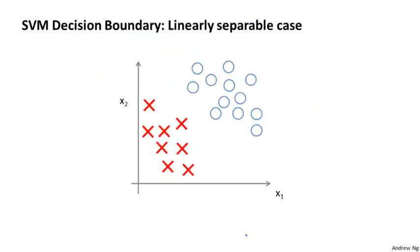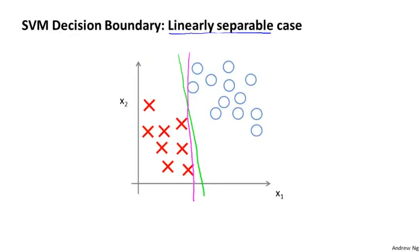When you solve this optimization problem, you get a very interesting decision boundary. If you look at a data set with positive and negative examples, this data is linearly separable — there exist many different straight lines that can separate the positive and negative examples perfectly. For example, here's one decision boundary that separates the positive and negative examples, but that doesn't look like a very natural one. And here's another, but neither of those seem like particularly good choices.